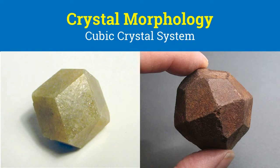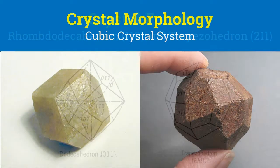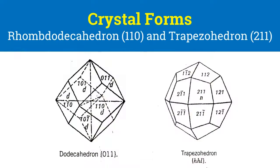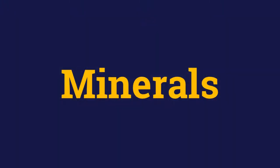Garnets only crystallize in the cubic crystal system. These minerals are notable for having a strong power of crystallization and typically form compact crystals. Garnet crystallizes in two crystal forms: rhombododecahedron, made of 12 diamond-shaped faces, or trapezohedron, made of 24 trapezoid-like faces.